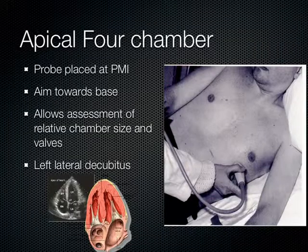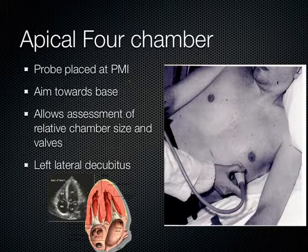The apical 4-chamber view is obtained by putting the indicator to the patient's right, and you're really going for that PMI — that point on the chest where the apex of the heart comes to the chest wall. This is made easier when you put the patient in left lateral decubitus, as you're about to see.